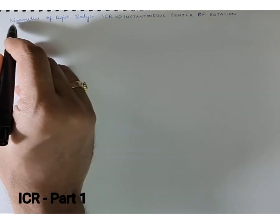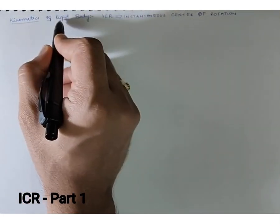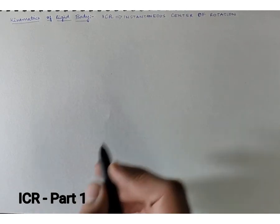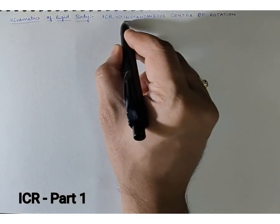Hello everyone, in this lecture we are going to learn about kinematics of rigid body. We're going to deal with the location of an ICR in any given mechanism, which we will treat as a rigid body mechanism. What does ICR stand for? ICR stands for instantaneous center of rotation.